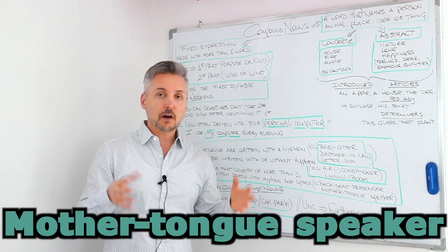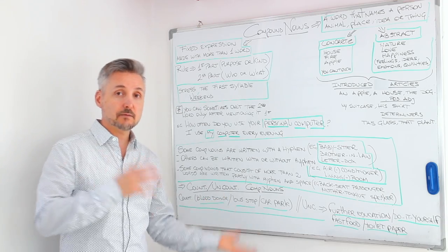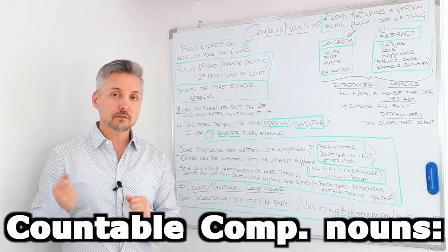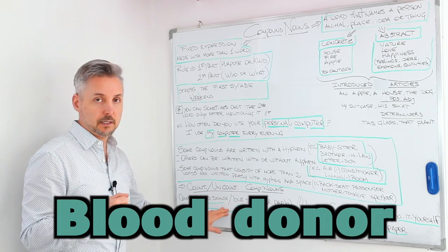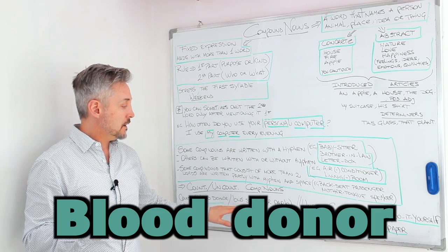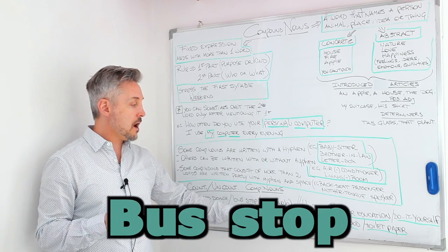Now, obviously, compound nouns can be countable and uncountable. And I listed some countable ones. Blood donor. Here we don't need a hyphen. Blood donor. Bus stop. Car park.